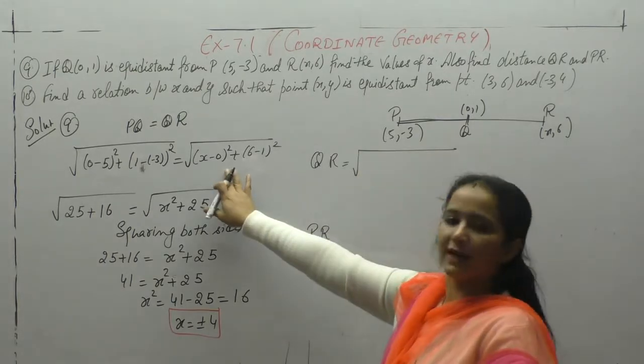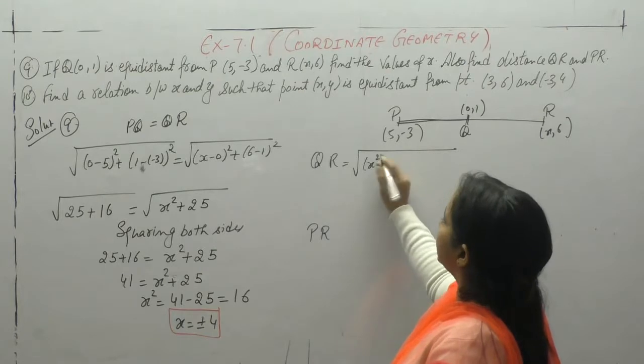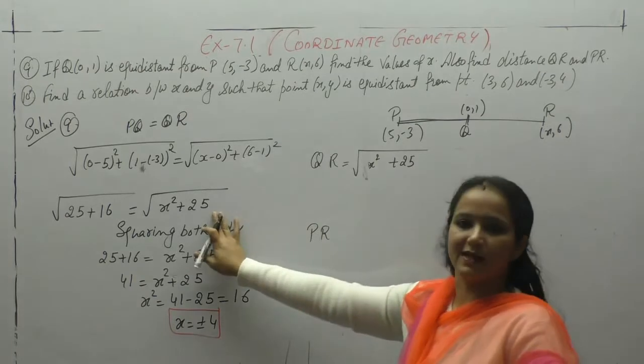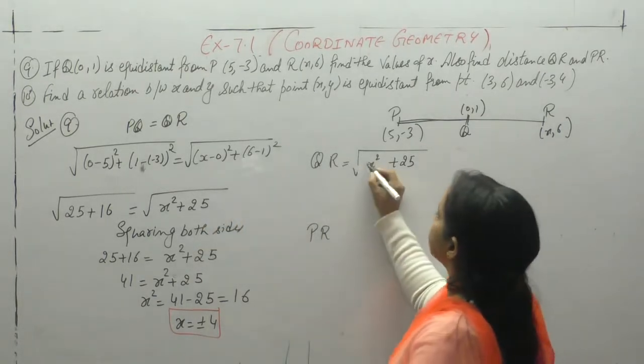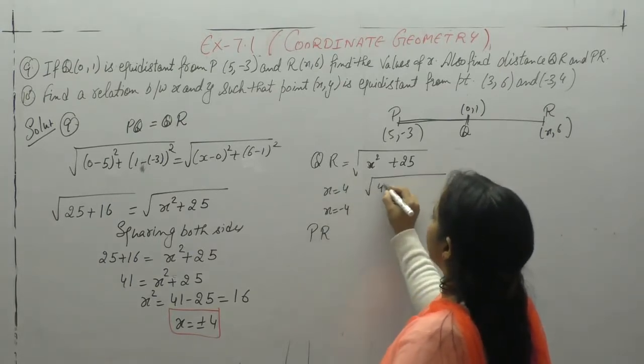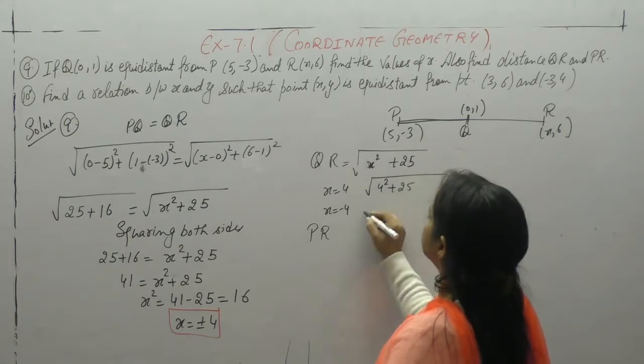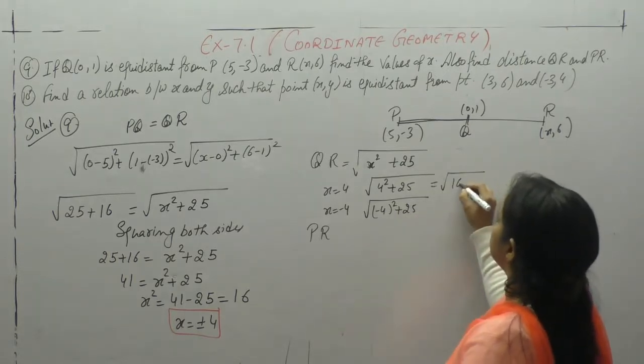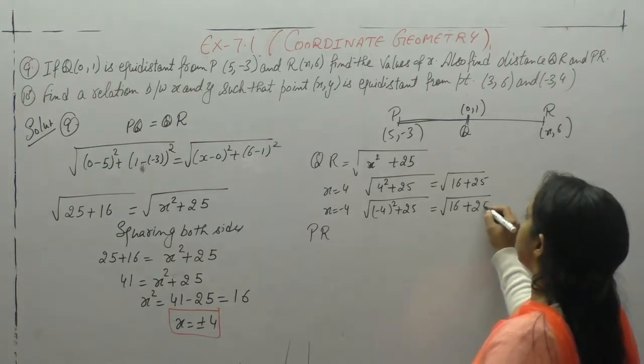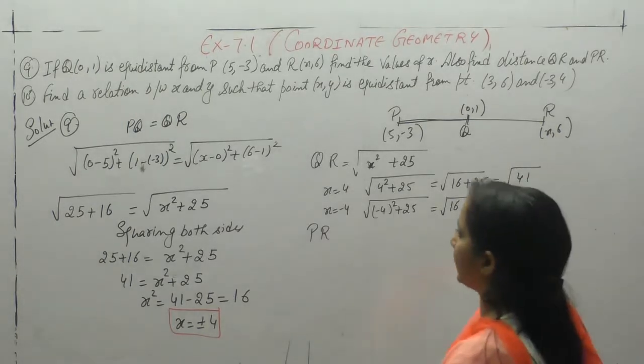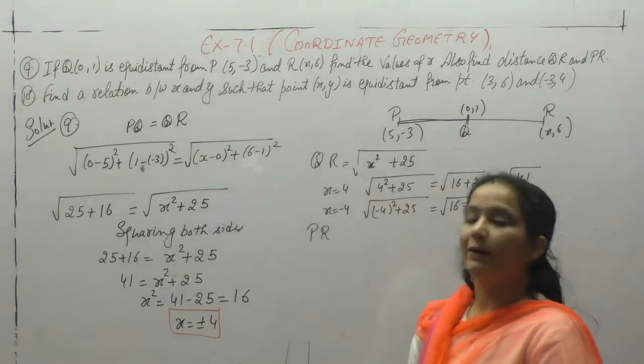QR value we found here, what is it? Square root of x squared plus 25. QR we solved. Now x has two values, plus 4 or minus 4. So when x is 4, when x is minus 4: 4 square is 16 plus 25, minus 4 square is also 16. So square root of 41 units we get for QR.